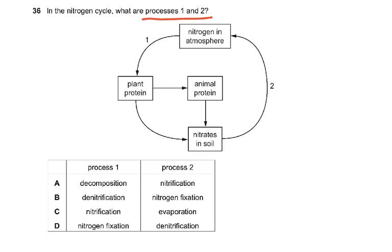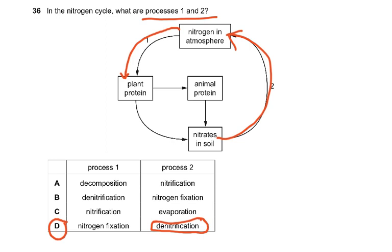Question 36: In the nitrogen cycle, what are processes one and two? Either you know the nitrogen cycle very well or you don't. In process one, nitrogen in the atmosphere goes to plant proteins — this cannot be decomposition, denitrification, or nitrification, so it must be nitrogen fixation. Process two shows nitrates in the soil going back as nitrogen gas to the atmosphere — this is denitrification, the enemy of farmers. Revise the nitrogen cycle and focus on the arrows going out of and back to atmospheric nitrogen.